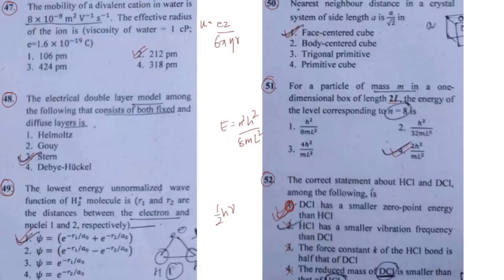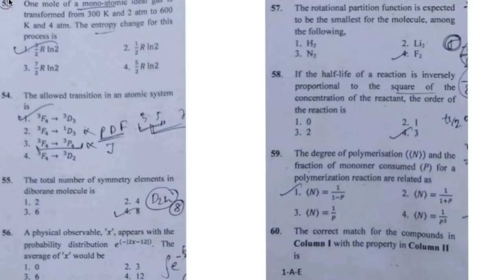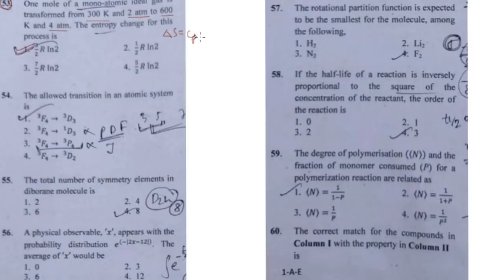Question 53 states that one mole of a monoatomic ideal gas is transformed from 300 K and 280 atm to 600 K and 480 atm, and asks for the entropy change. The answer is option number one. The formula used is ΔS = Cp ln(T₂/T₁) − R ln(P₂/P₁), where Cp = (5/2)R. Just plug all the values in and solve to get the answer.